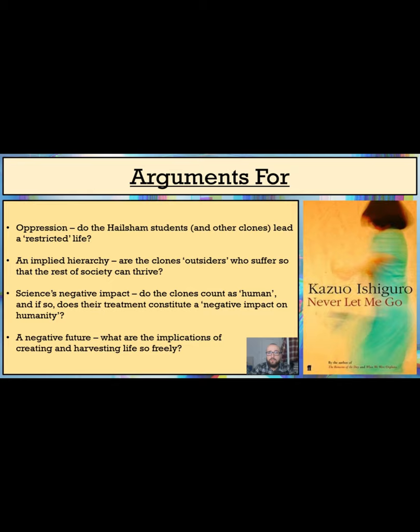With such shortened lifespans, the donors are unable to lead full lives. Additionally, what are the implications of creating and harvesting life so freely? Towards the novel's end, it is revealed that other facilities that reared donors are much worse than Hailsham and are almost akin to factory farms.